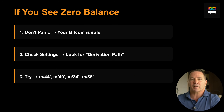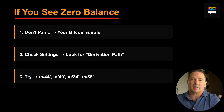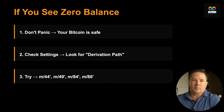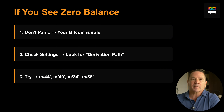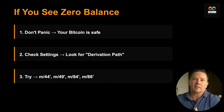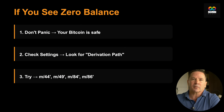Third, if you're recovering a wallet and see a zero balance but know you had Bitcoin in there, don't panic. Look for settings, advanced options, or derivation path options. One of the other derivation paths will show your Bitcoin if the seed phrase is correct. Most good wallets like Sparrow Wallet make this easy — when setting up or restoring, there's a drop-down to specify script type or derivation path, clearly labeled Legacy, Nested SegWit, Native SegWit, or Taproot. Mobile wallets are trickier because they try to keep things simple, which can be frustrating for accessing a specific derivation path.